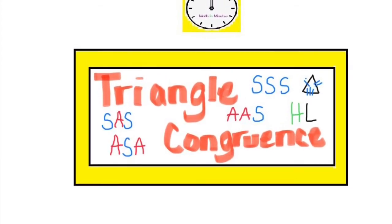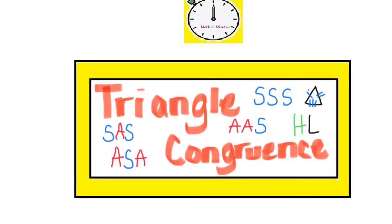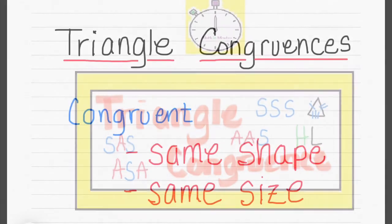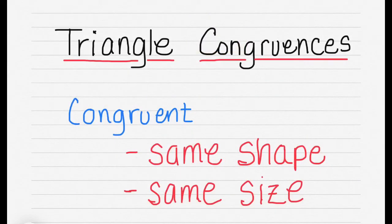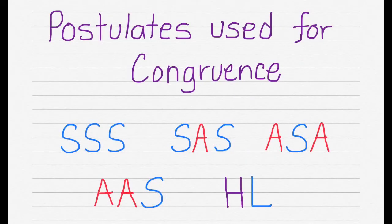This video is on triangle congruences. What congruent means is that they're the same size and the same shape, and this is the symbol for congruent. There are postulates that are used to show triangle congruencies, and we're going to take a look at five of them.